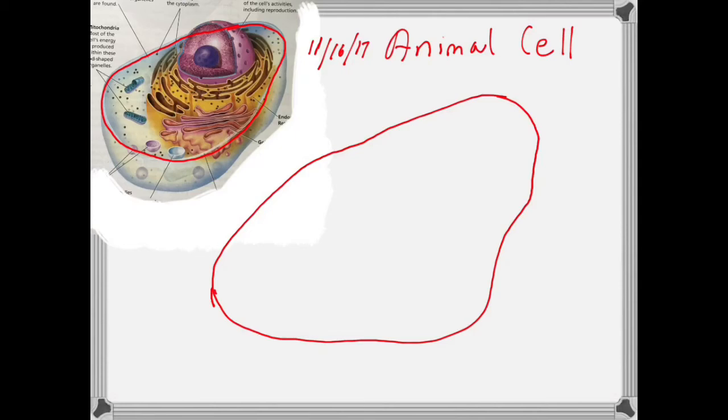Okay, so this is a model of an animal cell that we're drawing, and it's cut in half so we can see the parts of it. So you got that shape—we started with this kind of avocado shape.